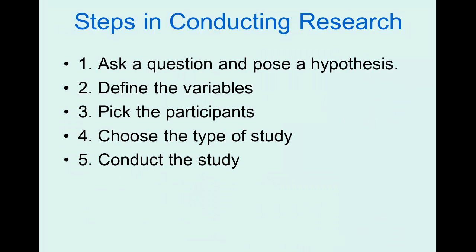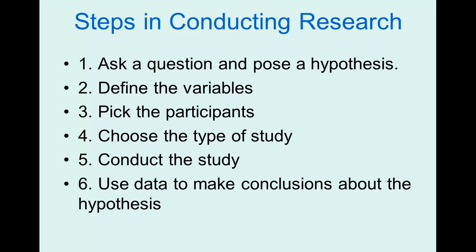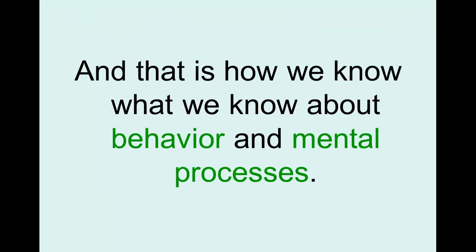Once we've chosen the type of study — descriptive, correlational, or experimental — we go ahead and actually conduct the study, then use the data to make conclusions about the hypothesis, and then start all over again. Either the hypothesis wasn't supported and we need to make changes, or it was supported but we have further questions to ask. Science is a cyclical process, always going on and on — and that's how we know what we know about behavior and mental processes.